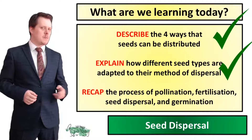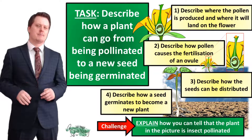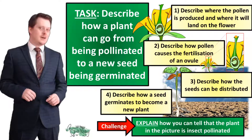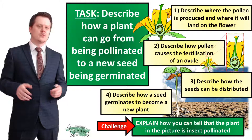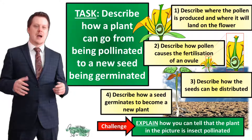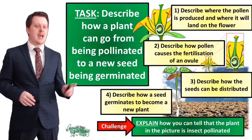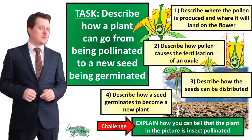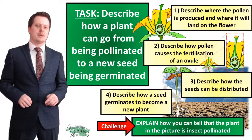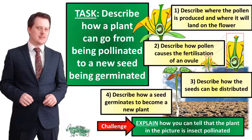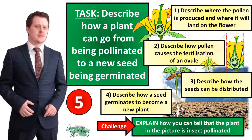Next we're going to link all the ideas from our plant reproduction topic. I'd like you to describe how a plant goes from being pollinated to a new seed being germinated. I've broken this down into four questions: describe where the pollen is produced and where it will land on the flower; describe how pollen causes the fertilization of an ovule; describe how the seeds can be distributed; and describe how a seed germinates to become a new plant. As a challenge, explain how you can tell our plant in the picture is insect pollinated.